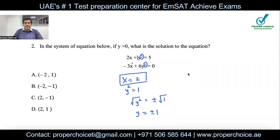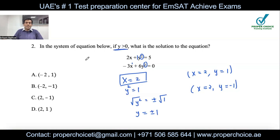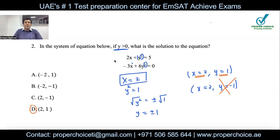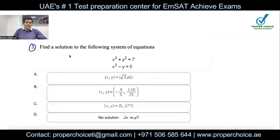So x = 2 and y = 1 or y = −1. The question includes the condition y > 0, meaning the value of y must be positive. So I ignore y = −1 and go with x = 2, y = 1, which corresponds to option D. If they hadn't included this condition, either value would be acceptable.